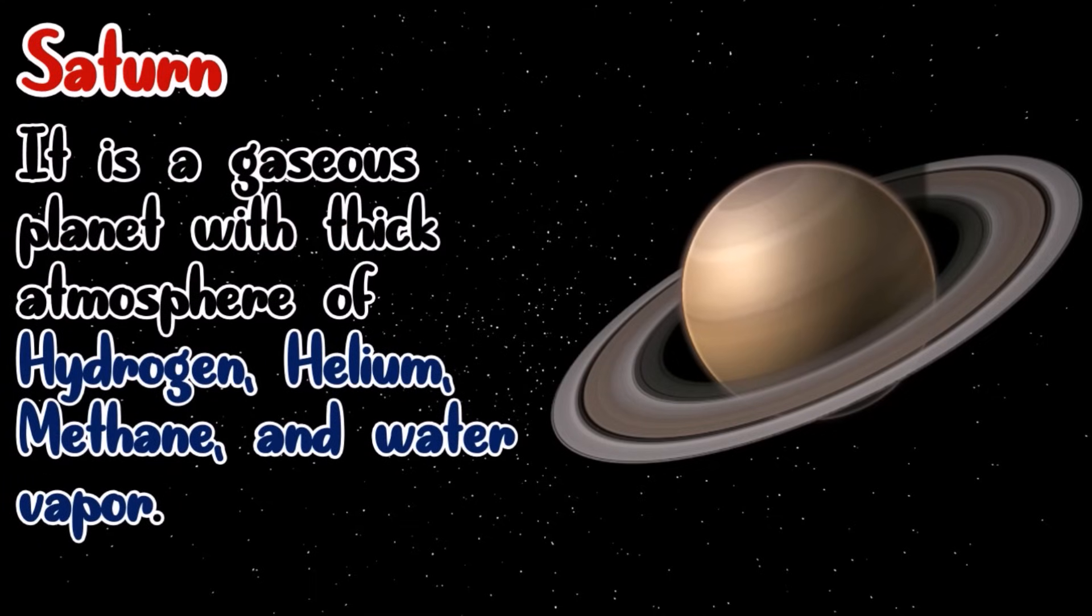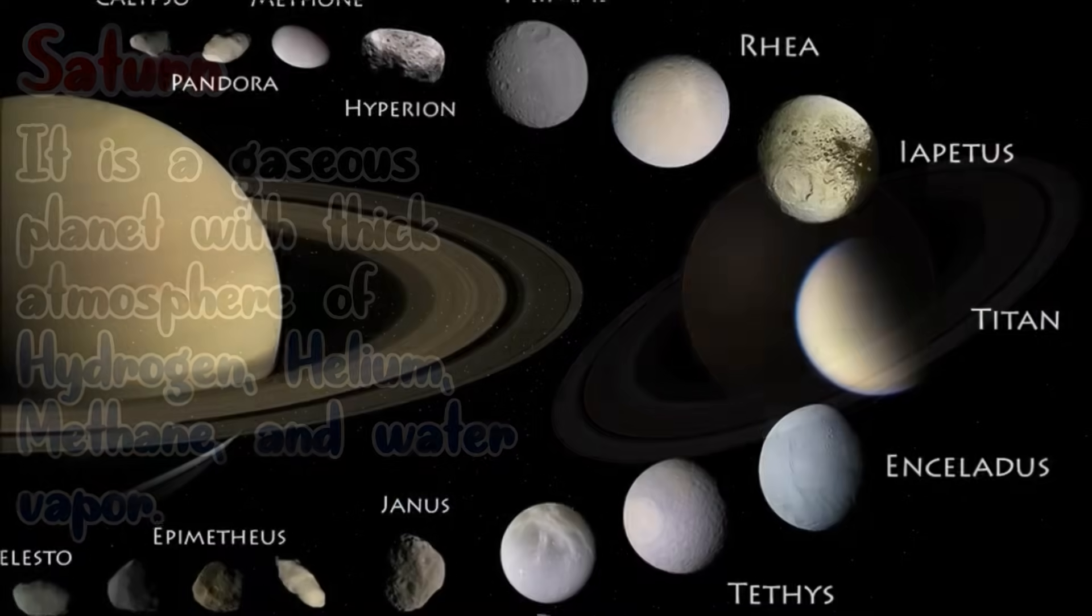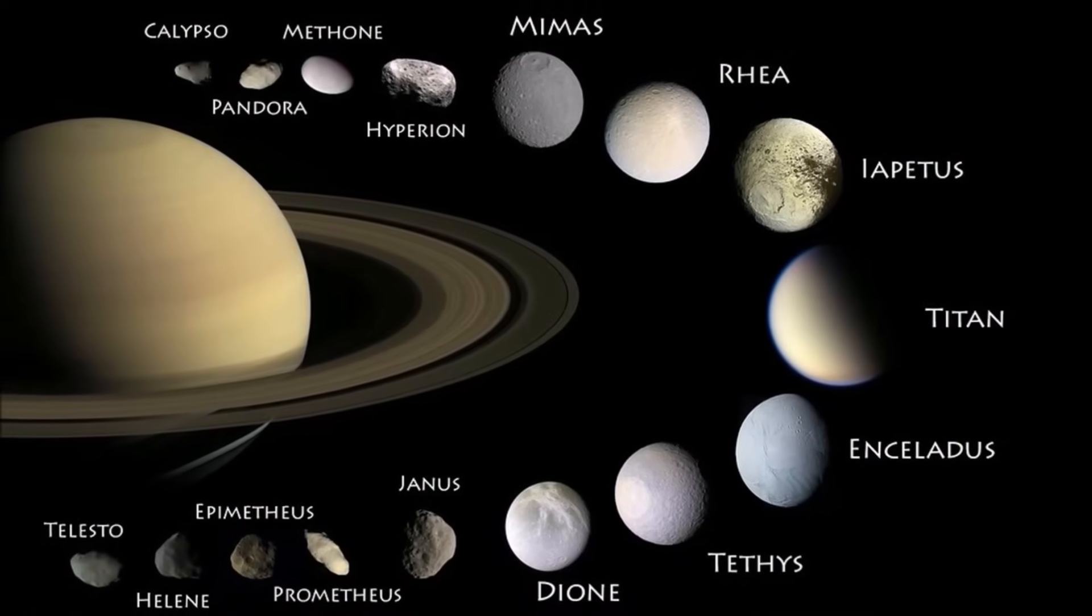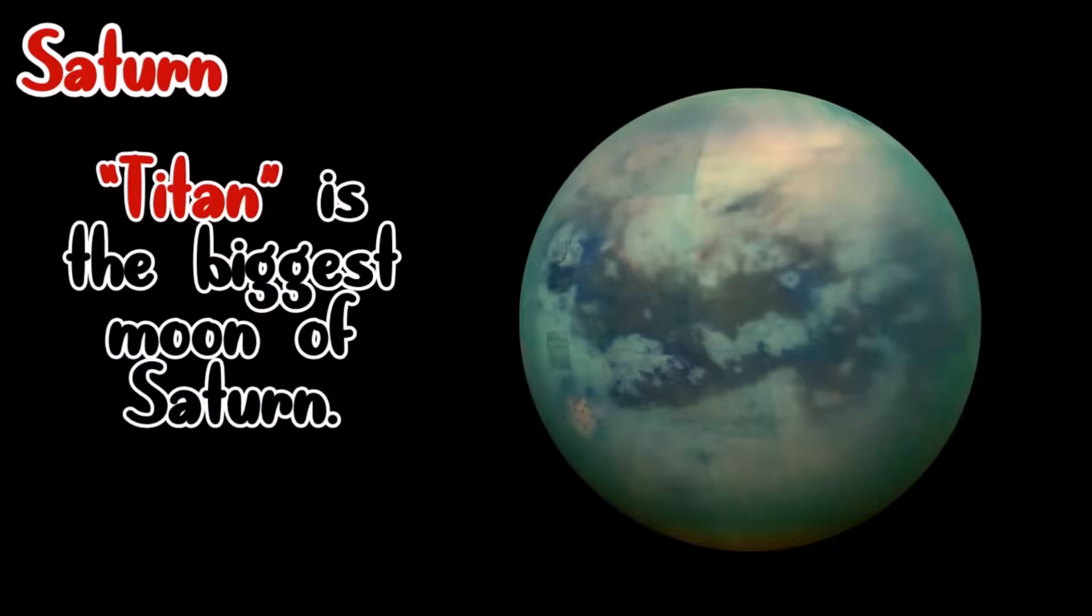Saturn is a gaseous planet. It has a thick atmosphere of hydrogen, helium, methane, and some water vapor. Saturn has at least 31 moons. And the largest moon of Saturn is called Titan.